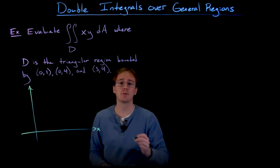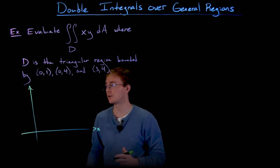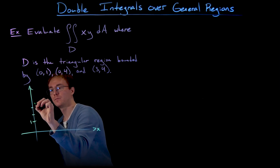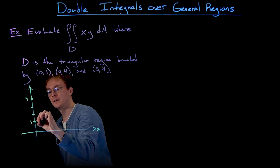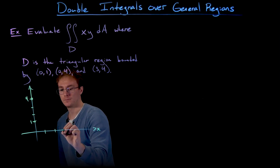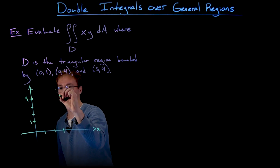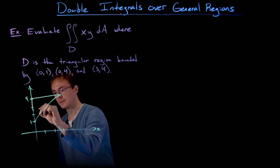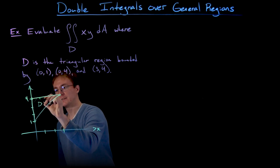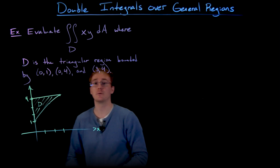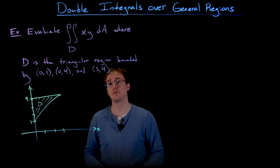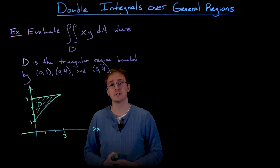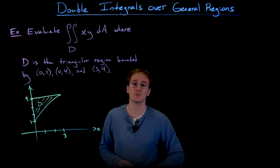Let's go ahead and plot these three points and see what this triangular region looks like. We have the point (0,1), the point (0,4), and then the point (3,4). These three points create a triangle when connected, and the space inside this triangle is the region D that we're going to integrate x times y over. What's interesting about this region D is that we can easily view it as either a type 1 or a type 2 region.